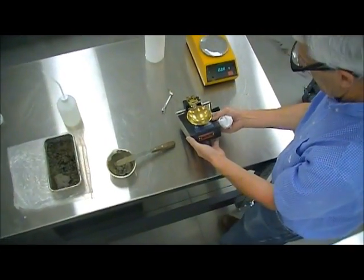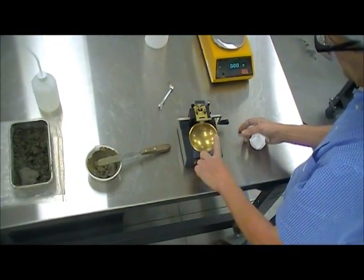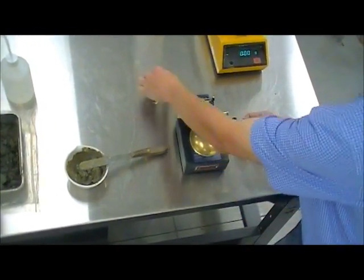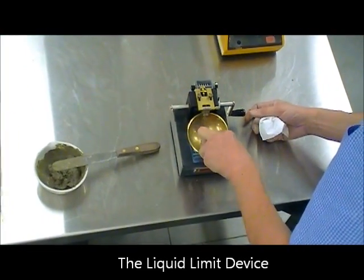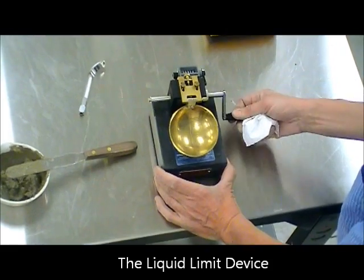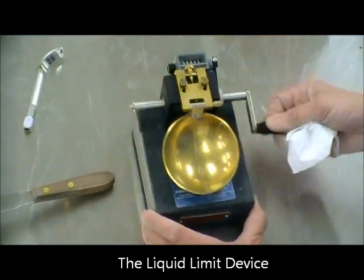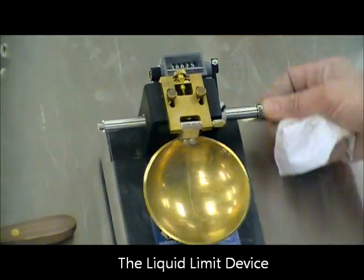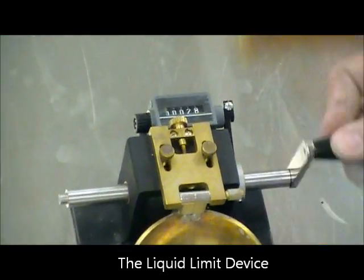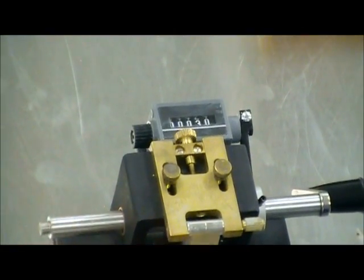Characteristics of the equipment: it's basically a brass cap where we're going to place the material here and then we're going to cut a groove. And then we're going to drop this at a rate of two revolutions per second. And we're going to count the number of revolutions that it takes for that gap to close.